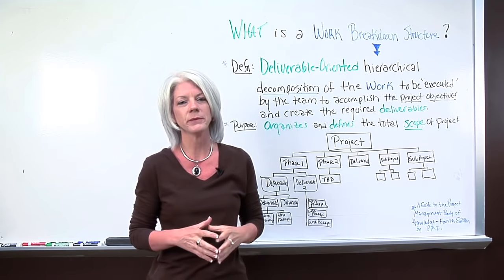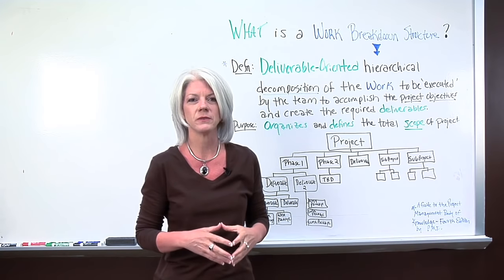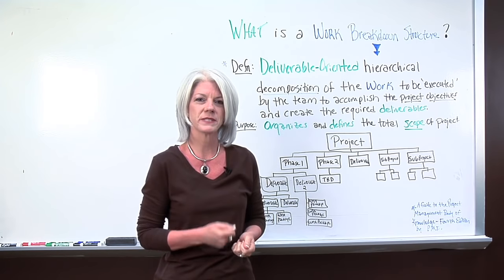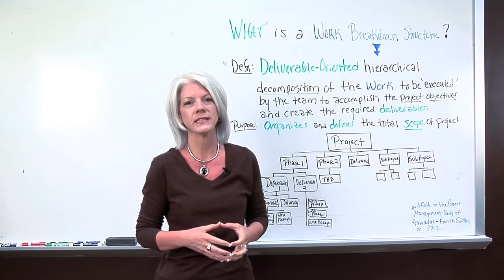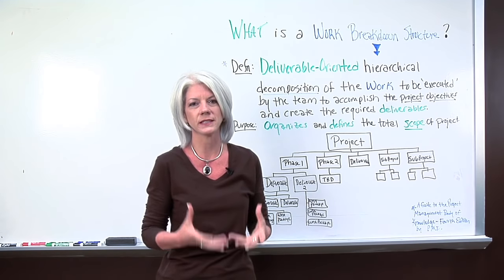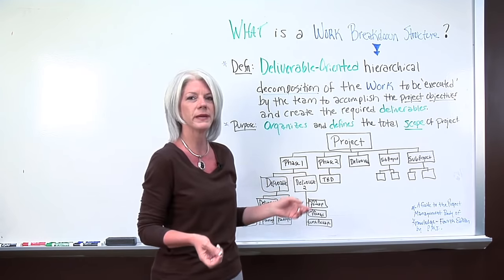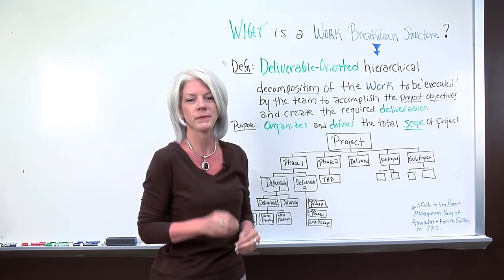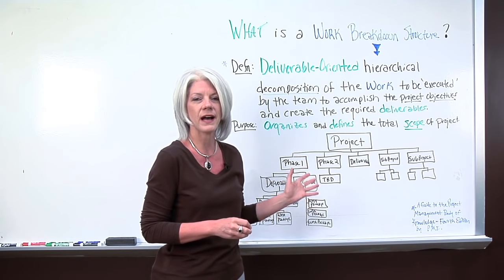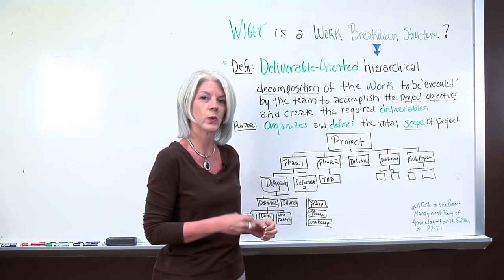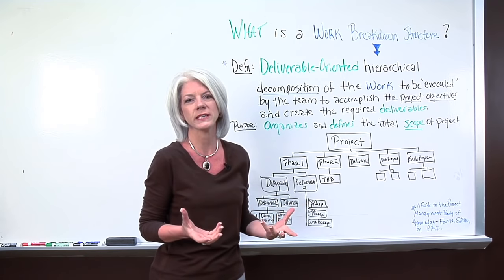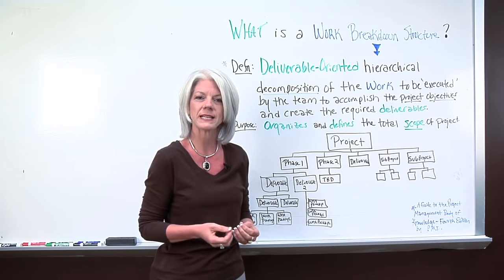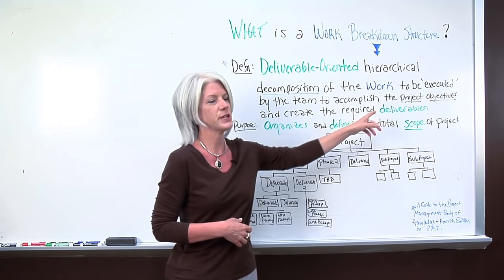Many times I see teams get confused because they lose sight of why we're doing this project. And specifically, the reason we're doing a project is to produce the deliverables. This is a very important piece. If you can create a work breakdown structure from the beginning and identify the deliverables being produced and when, then a picture truly is worth a thousand words — not only for you, the project manager, but your team. It sets the vision again for the project objectives.